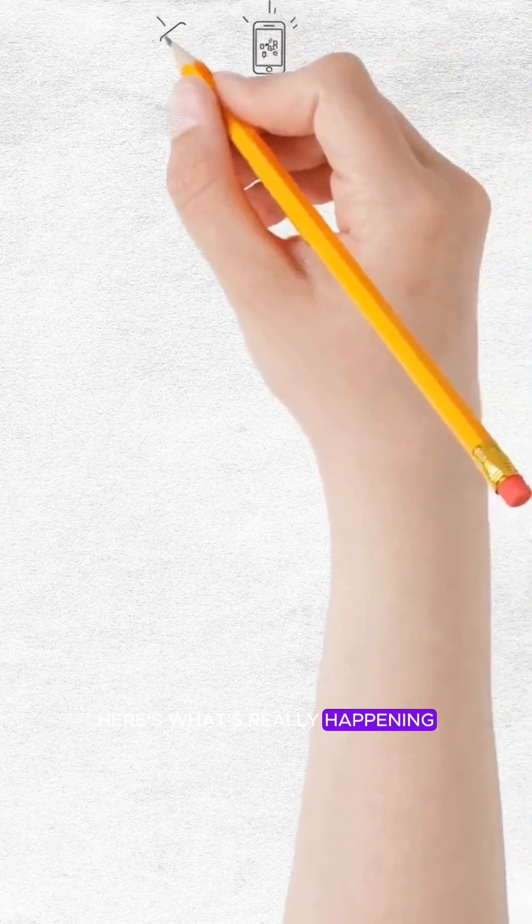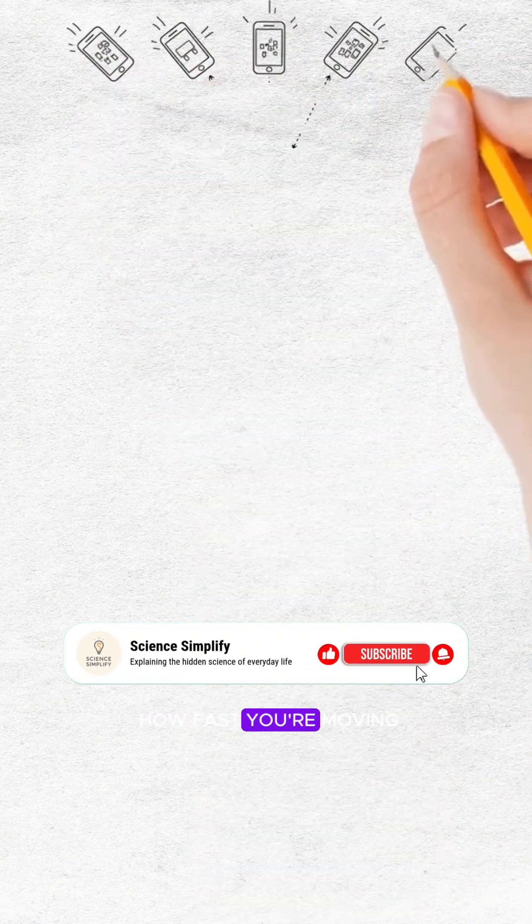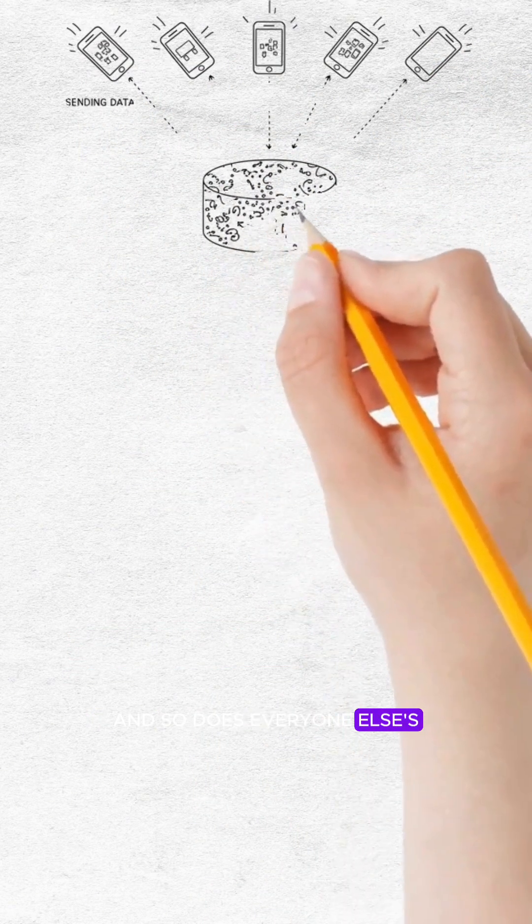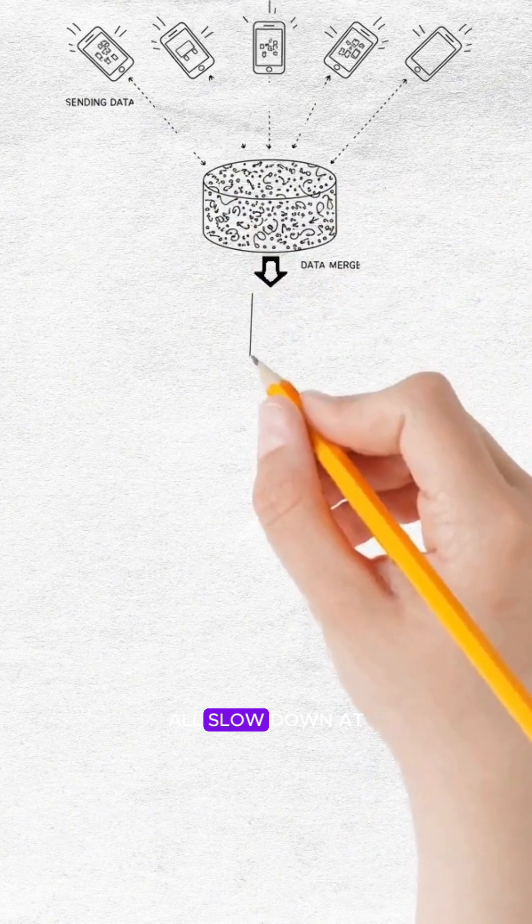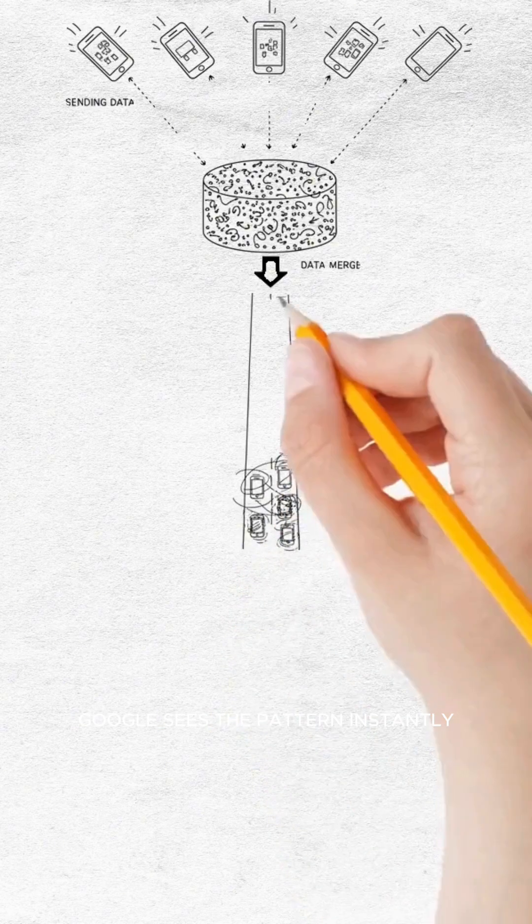Here's what's really happening. Your phone quietly reports how fast you're moving whenever you use Google Maps. And so does everyone else's. When thousands of phones on the same road all slow down at the same time, Google sees the pattern instantly.